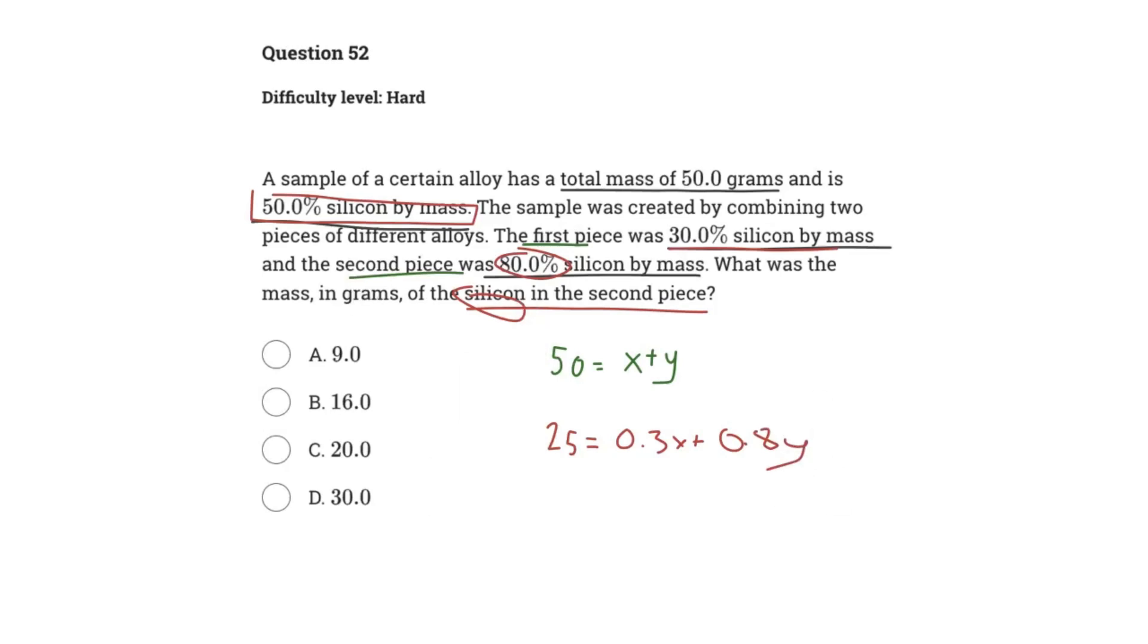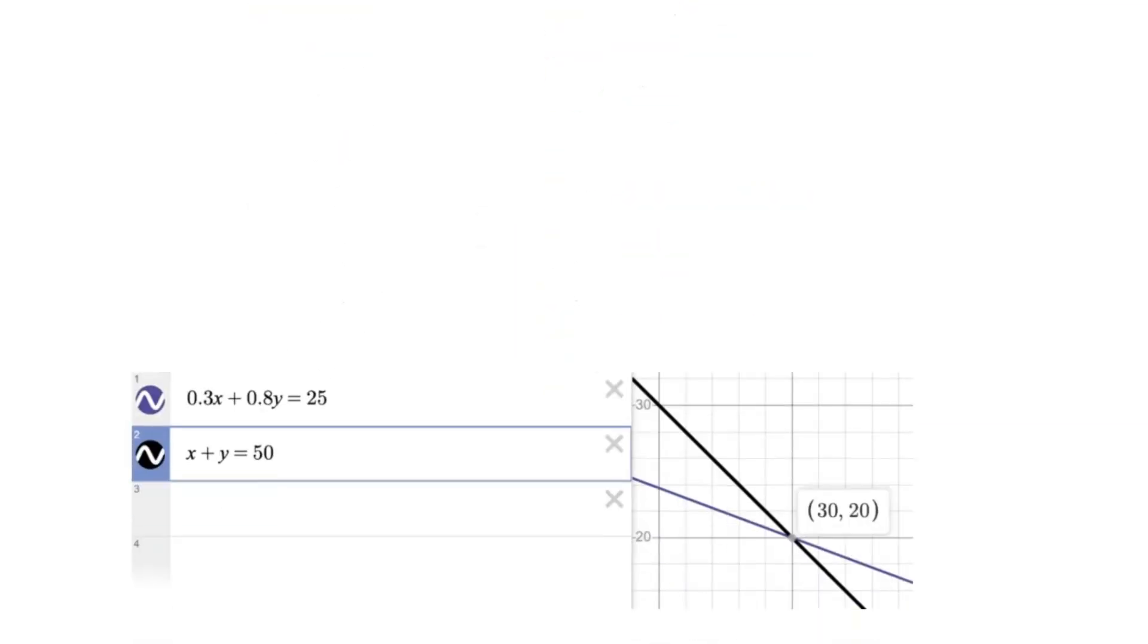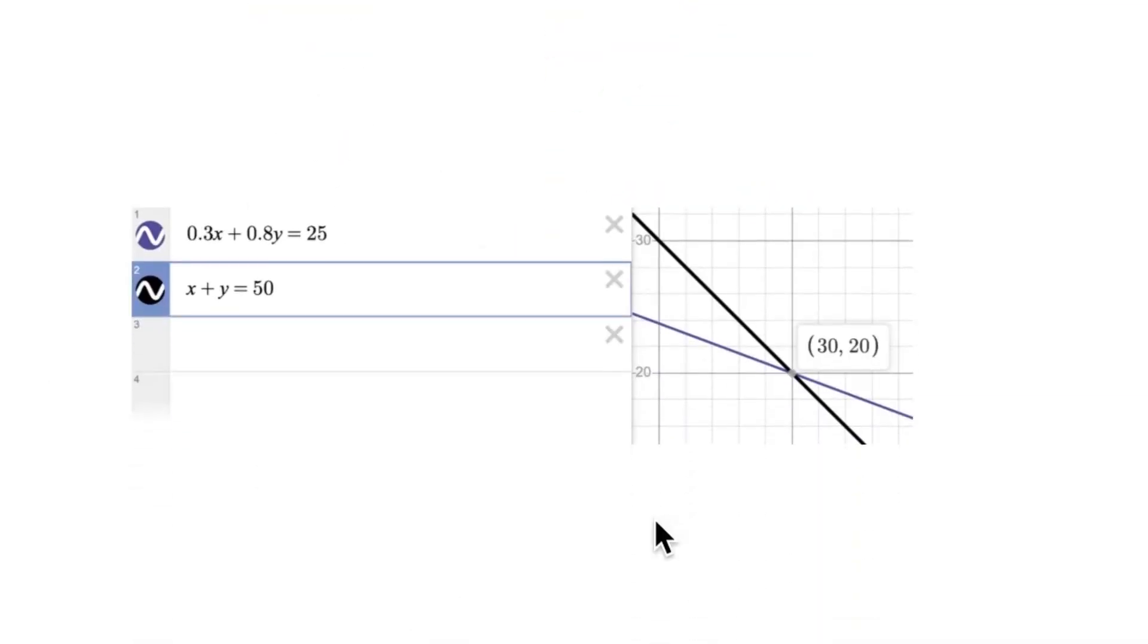All right, so now that we've got these two systems of equations, we go over to Desmos and plug it in. So we can see, guys, we plugged it in here and we find the intersection. So this is our corresponding x and y values.